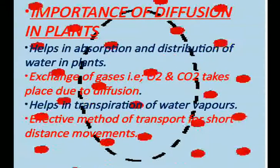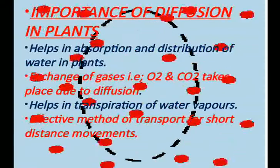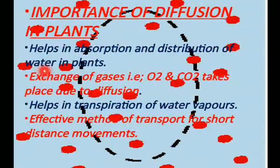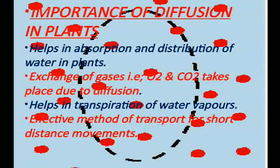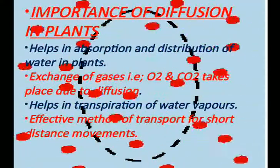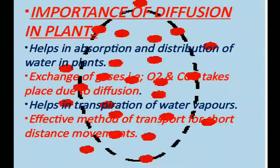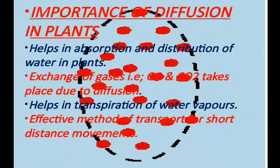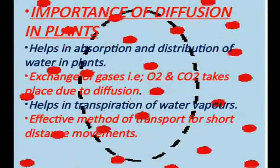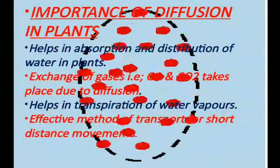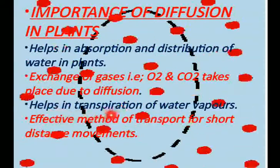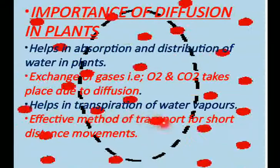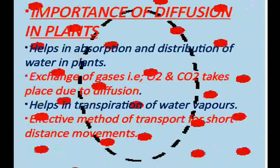Diffusion is a very important means of short distance transport in plants. It helps in the absorption and distribution of water. Exchange of gases — oxygen and carbon dioxide — also takes place by diffusion: oxygen is released during photosynthesis and absorbed during respiration, while carbon dioxide is absorbed during photosynthesis and released during respiration. Diffusion also helps in transpiration of water vapors from the stomatal surface to the outside.